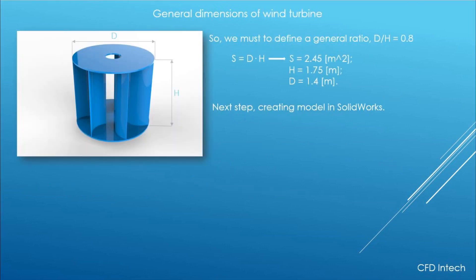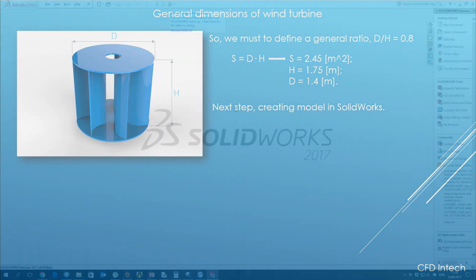Here we are calculating the diameter and height. The ratio between diameter and height we can choose about 0.8. Now let's open SolidWorks to create the 3D model of the wind turbine.